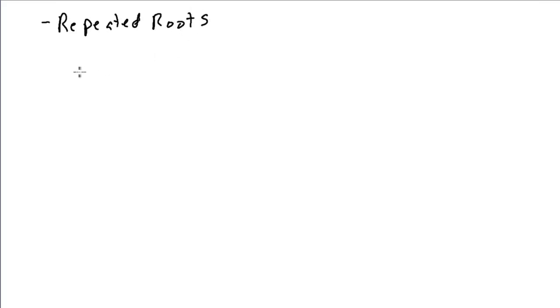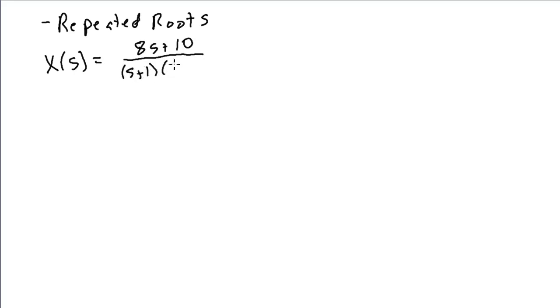The final case I want to look at is the repeated root case in partial fraction expansion, which has to be handled specially. I'll work through an example: 8s plus 10 over s plus 1 times s plus 2 cubed. We've got a repeated root at s plus 2. The order of the denominator, which is 4, is greater than the order of the numerator, so it is in proper form.